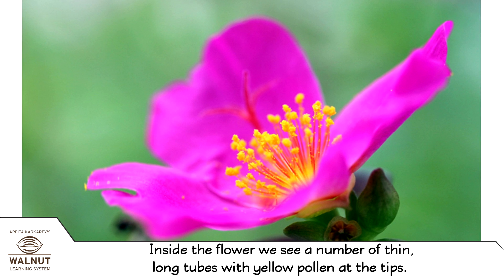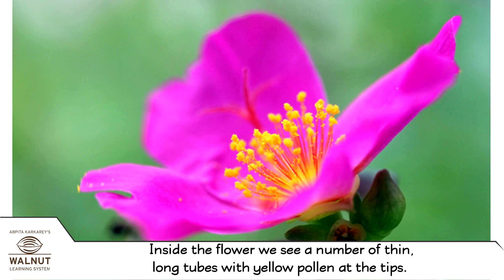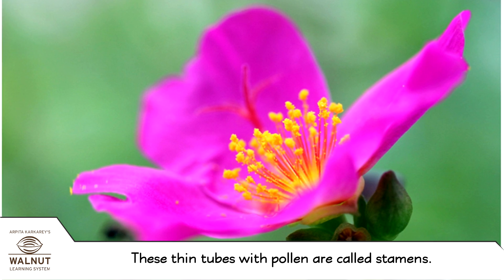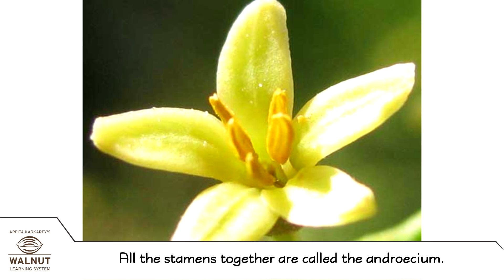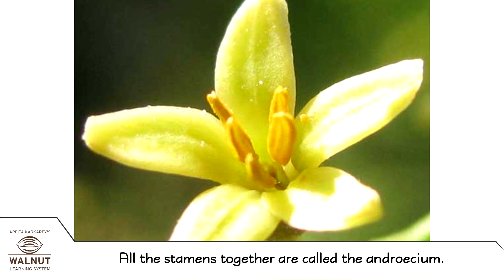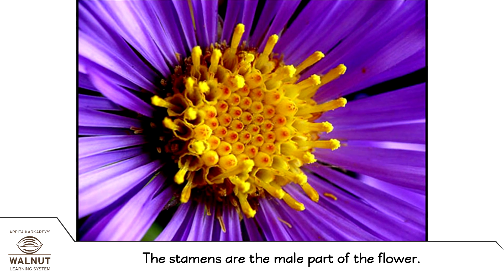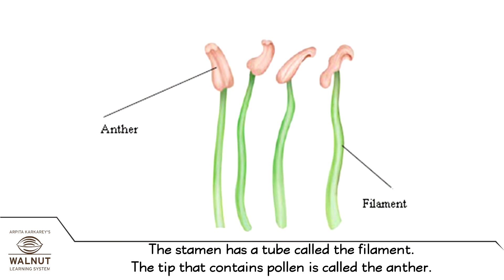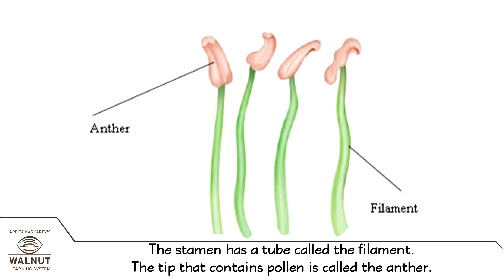Inside the flower, we see a number of thin, long tubes with yellow pollen at the tips. These thin tubes with pollen are called stamens. The stamens are arranged in a circle. All the stamens together are called the androeceum. The stamens are the male part of the flower. Can you spot the stamens here? The stamen has a tube called the filament. The tip that contains pollen is called the anther.